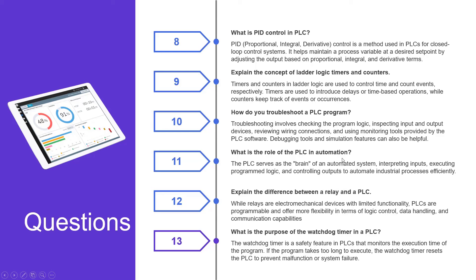What is the role of the PLC in automation? The PLC serves as the brain of an automated system, interpreting inputs, executing programmed logic, and controlling outputs to automate industrial processes efficiently. As for the difference between a relay and a PLC: while relays are electromechanical devices with limited functionality, PLCs are programmable and offer more flexibility in terms of logic control, data handling, and communication capabilities.